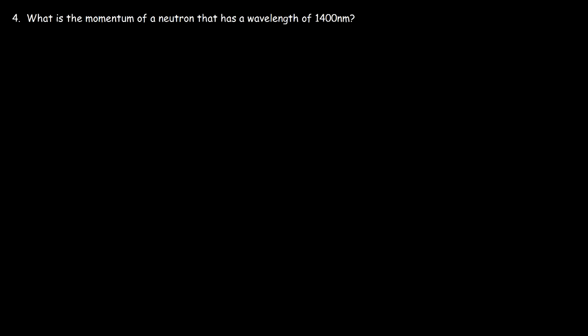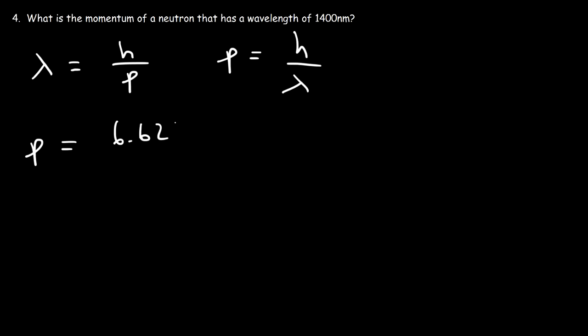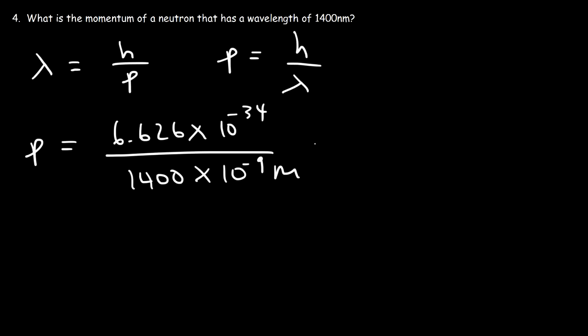Next problem: what is the momentum of a neutron that has a wavelength of 1400 nanometers? We know that wavelength equals Planck's constant divided by momentum, so the momentum is Planck's constant divided by the wavelength. That's 6.626 times 10 to the minus 34 divided by 1400 times 10 to the minus 9 meters.